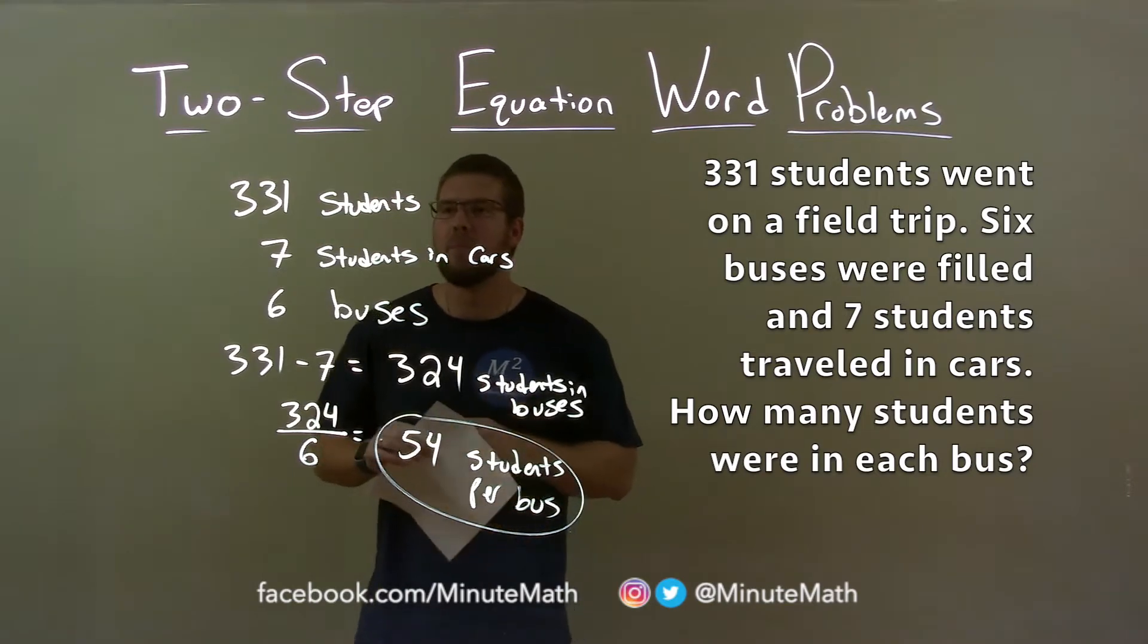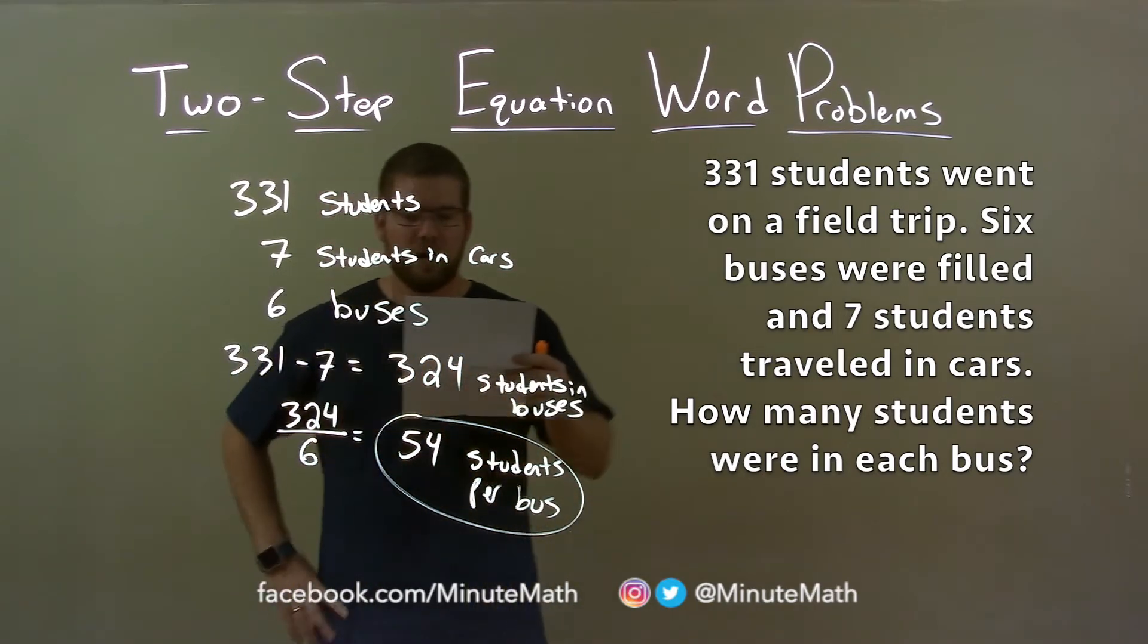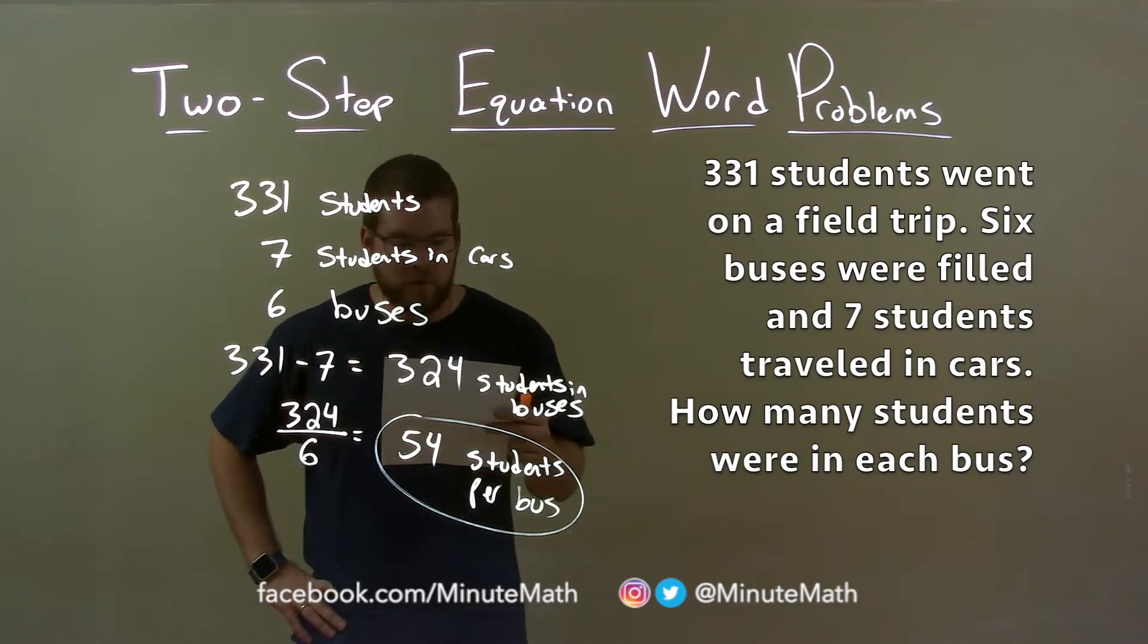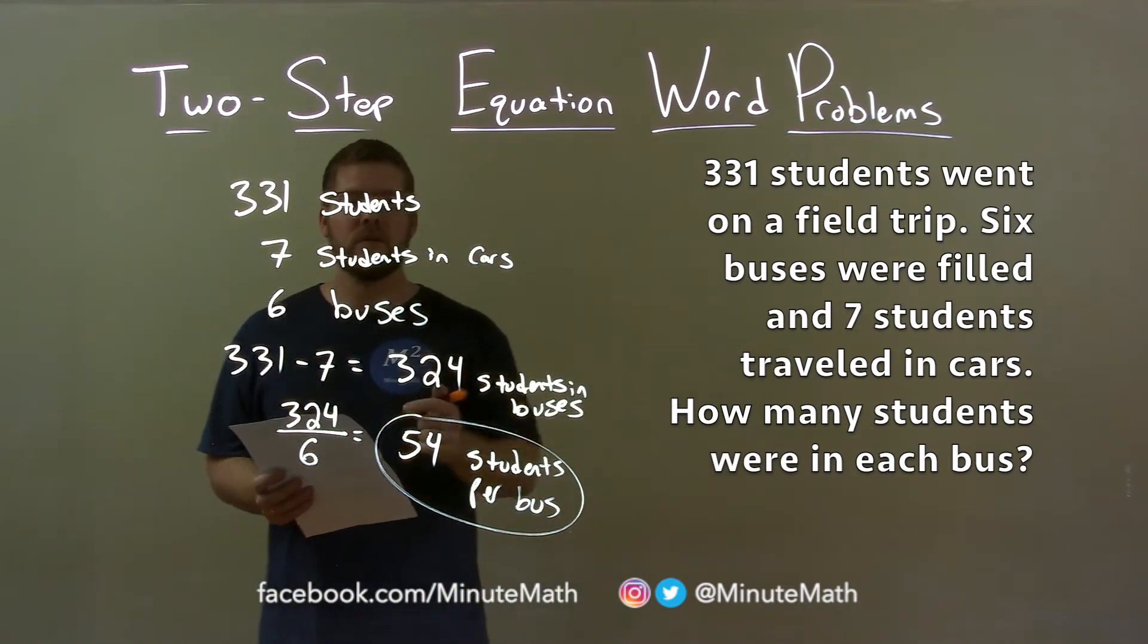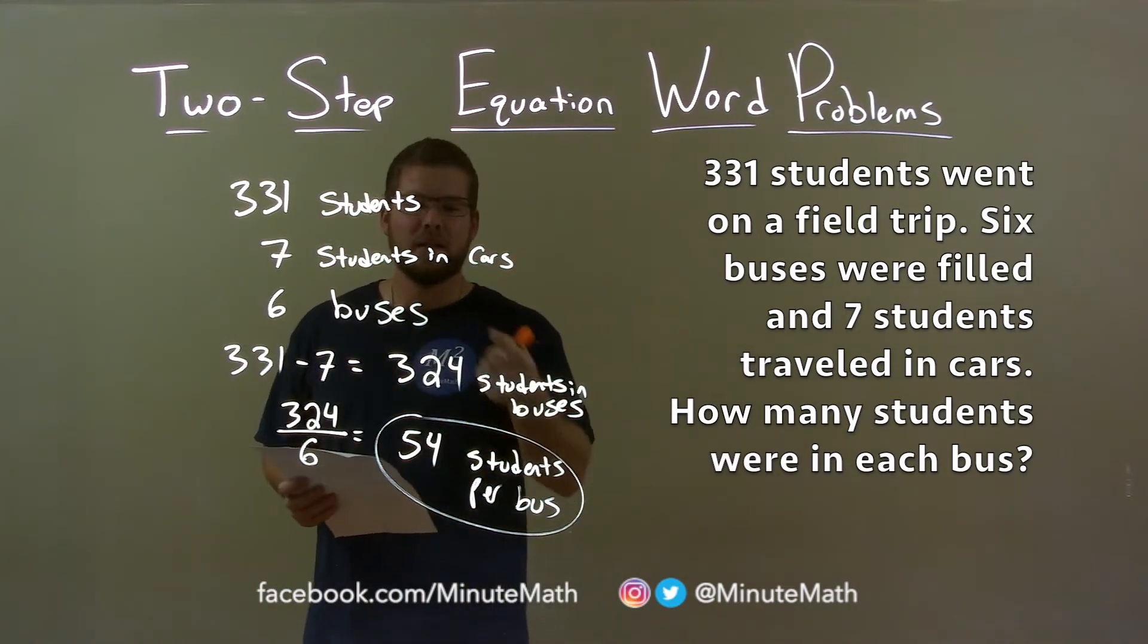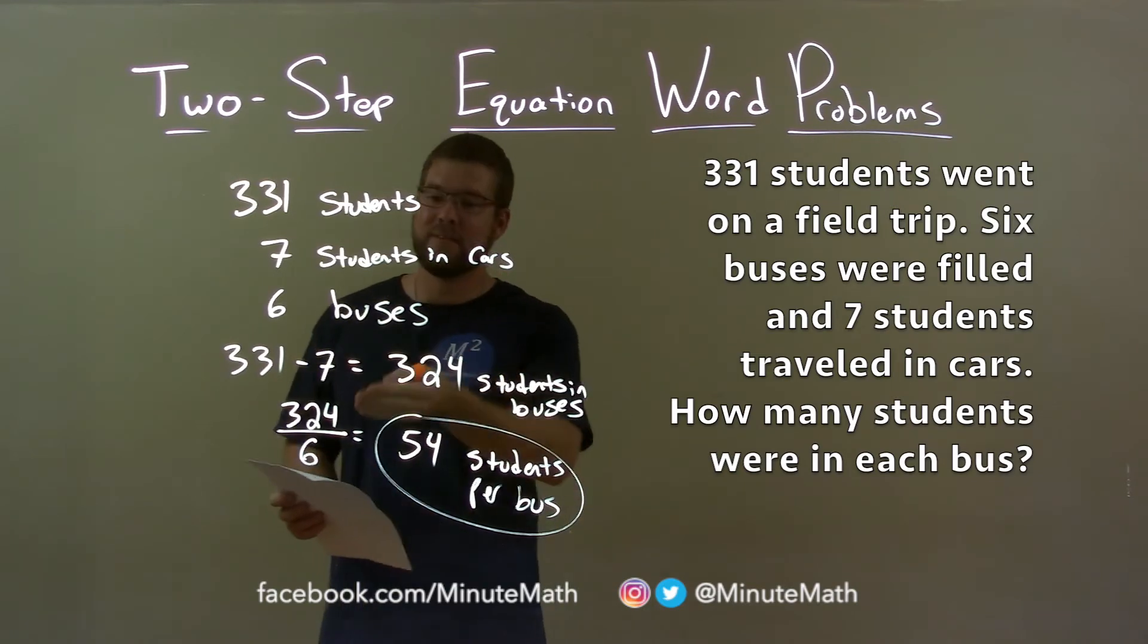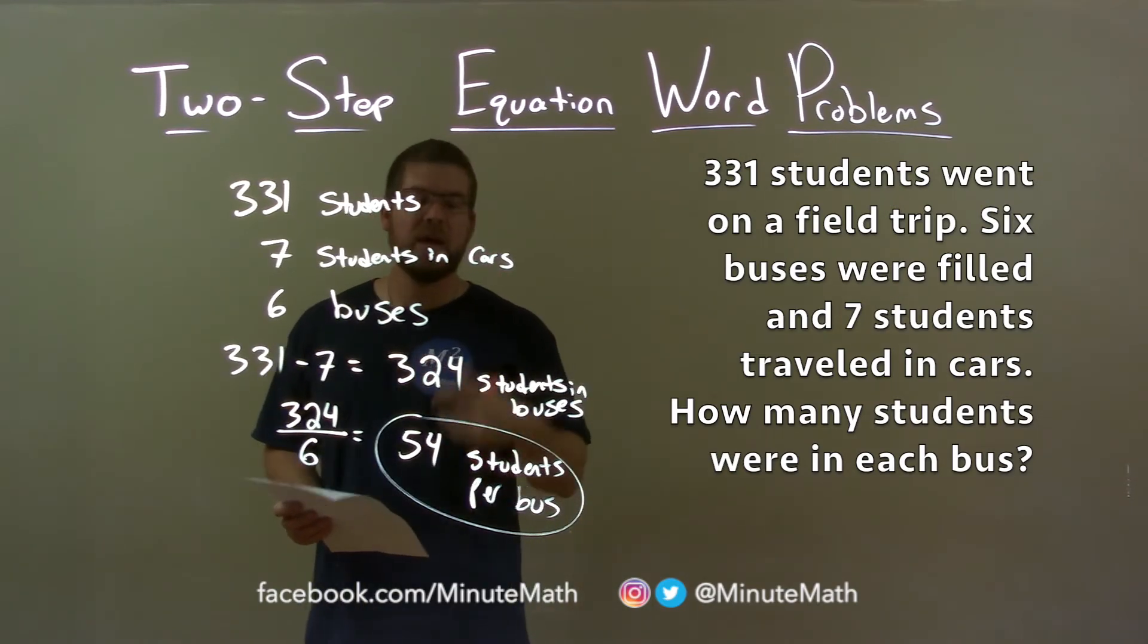So quick recap, for a given word problem: 331 students went on a field trip, six buses were filled, and seven students traveled in cars. How many students were in each bus? I took my 331 students, subtracted seven students went in cars, left with 324. Divide that by six number of buses, and we got 54 students per bus.